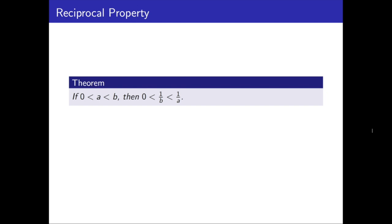So the first one is that if 0 is less than a and less than b, so two positive numbers where a is the smaller of the two, then that means that the reciprocals of those are also positive, but that 1 over b is less than 1 over a.